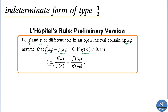That is, if f(x₀) = g(x₀) = 0, giving us the indeterminate form 0/0, then the limit equals f'(x₀) divided by g'(x₀). We differentiate the numerator and denominator separately with respect to x, then evaluate f' and g' at the point x₀, provided g'(x₀) is not equal to 0.